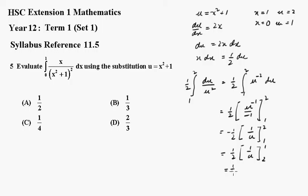Putting that in, we get one half times (1 minus one half). That becomes one half times one half, which is one quarter, and that is answer C.